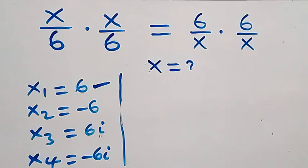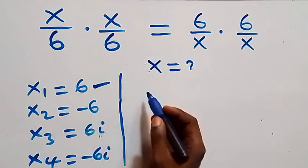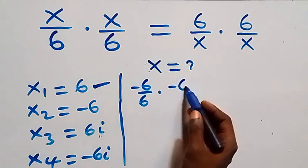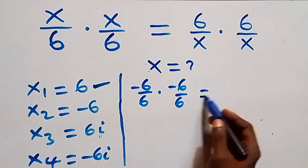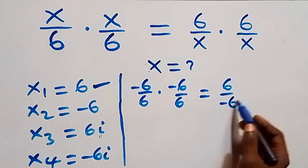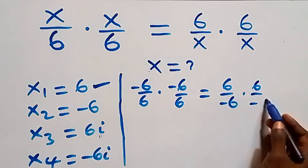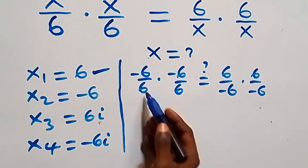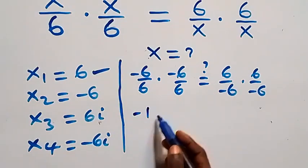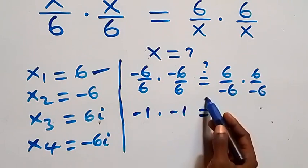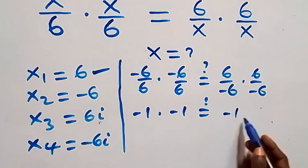Now checking x equals minus 6: minus 6 over 6 times minus 6 over 6 equals 6 over minus 6 times 6 over minus 6. This is the same as minus 1 times minus 1 equals minus 1 times minus 1, which gives plus 1 equals plus 1.